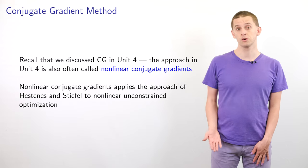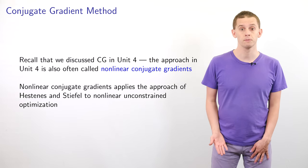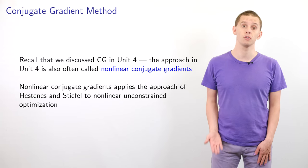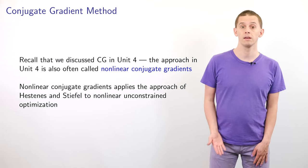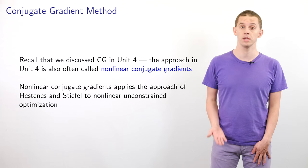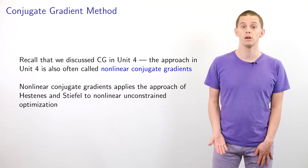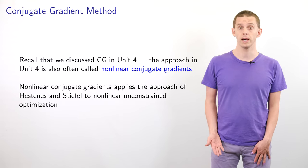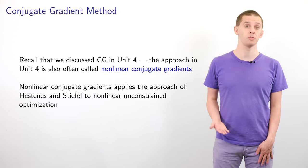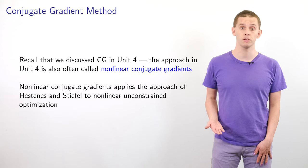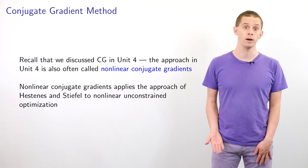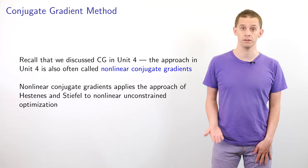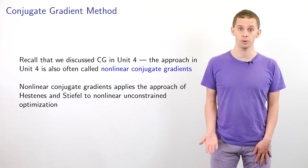We briefly discussed CG in Unit 4, where the approach was called nonlinear conjugate gradients — an algorithm that applies the approach of Hestenes and Stiefel to nonlinear unconstrained optimization. At the time we just presented the algorithm without discussing where it came from, and so here we're going to look in detail at how exactly these algorithms work.